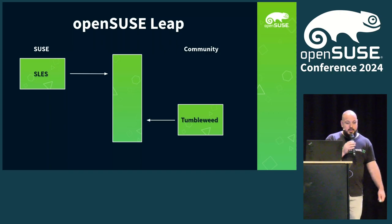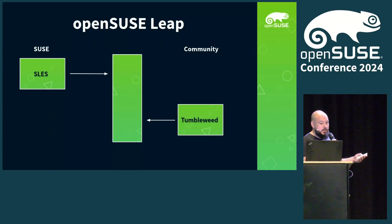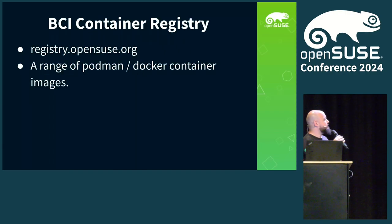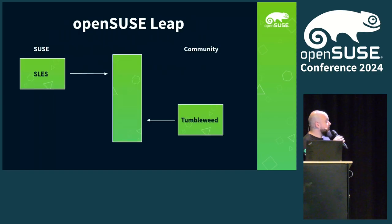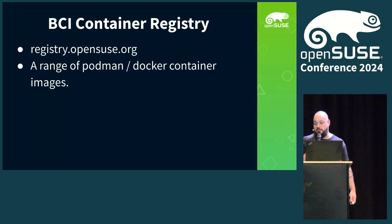Here is a diagram of everything I just said. On one hand we have SUSE Linux Enterprise Server — we take that in, then add a bunch of other packages from Tumbleweed that SUSE customers are less interested in, and add them to Leap to get something that Leap users find useful. We also have a container registry — it's not a distribution as such, but we take many of the RPMs in our distributions and use them to create containers and add them to the container registry.